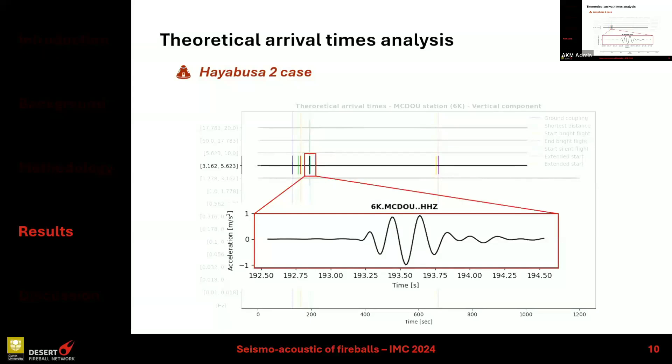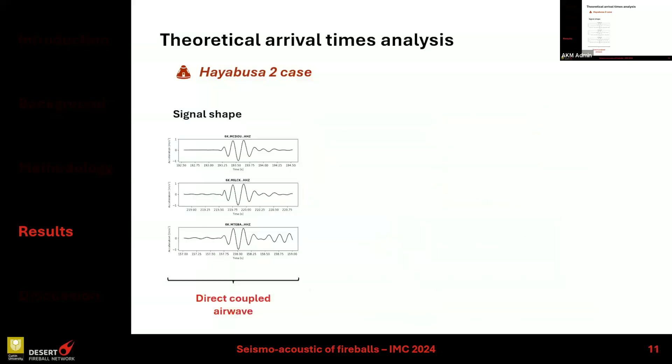I wanted to ensure I was really looking at the signal coming from the Hayabusa2 re-entry, so I performed some validation steps. I looked at the shape of the signal: it has a pretty short duration, a characteristic double-V shape, and no features of P or S waves that are usually observed for natural earthquakes. Thanks to the literature, I can say I'm looking at the direct coupled air wave.